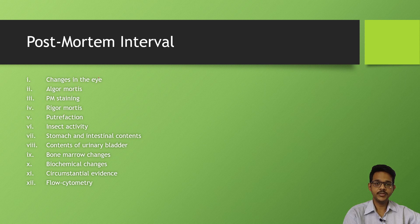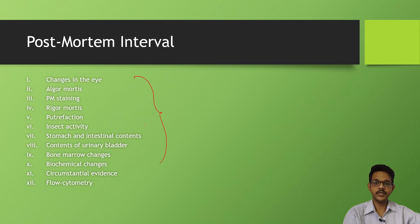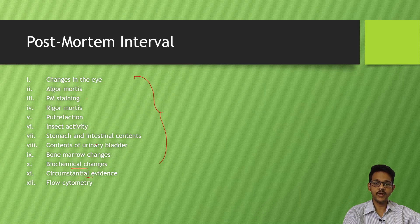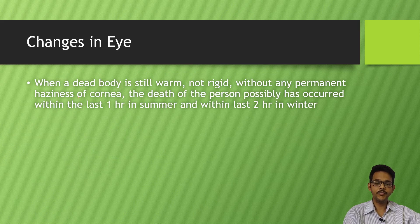Many methods include changes in the eyes, algor mortis, post-mortem lividity, and rigor mortis. These are all mainly changes in the dead body which occur after death. This may be immediate, early, and late changes. Some methods like biochemical methods and circumstantial methods don't include changes but the evidence present in the body.